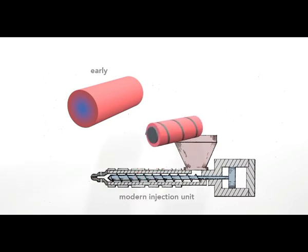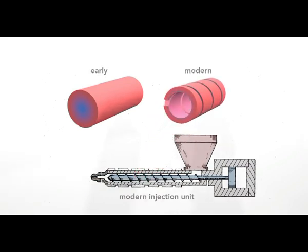First, in modern units, the plastic fills only the space around the shaft of the screw. This eliminates the cooler central region, leaving a thinner, evenly heated layer of plastic.